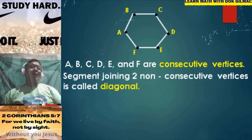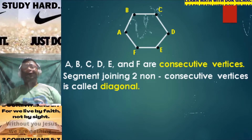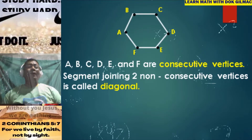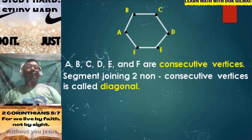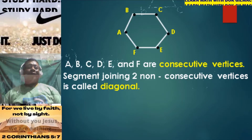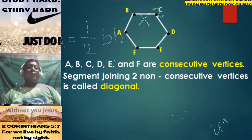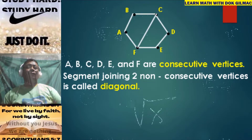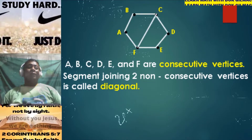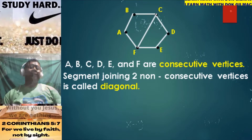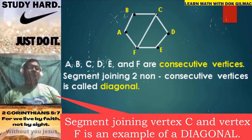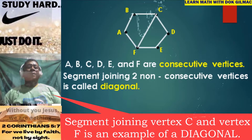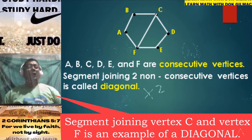The segment joining two non-consecutive vertices is what we call a diagonal. For instance, we're going to connect vertex C to vertex F. The segment joining vertex C and vertex F is an example of a diagonal.